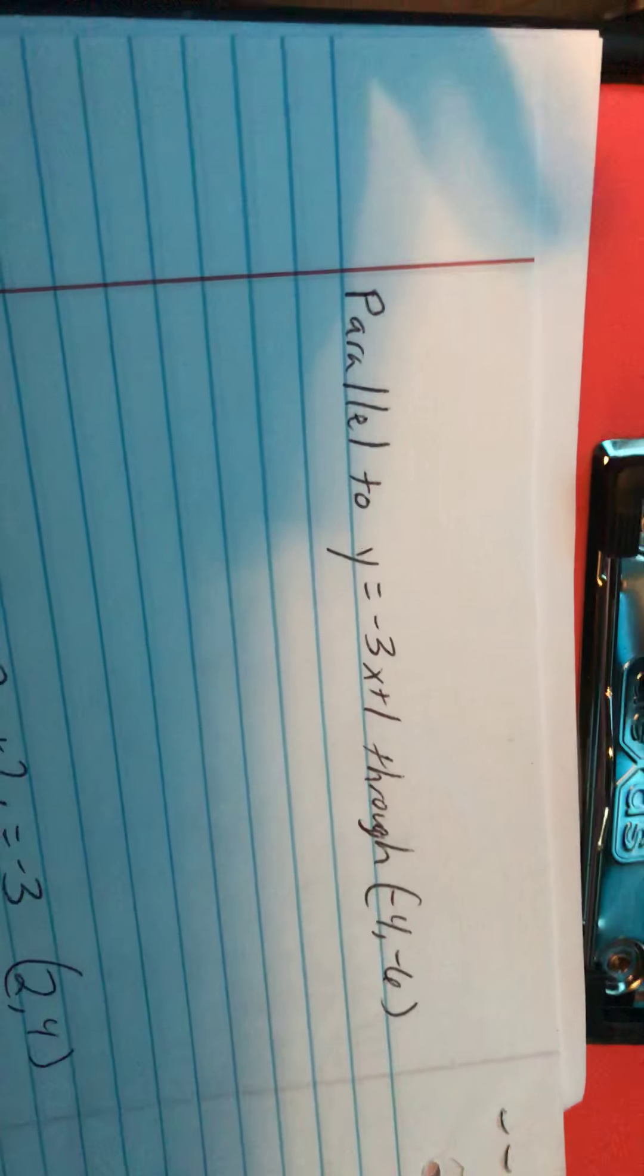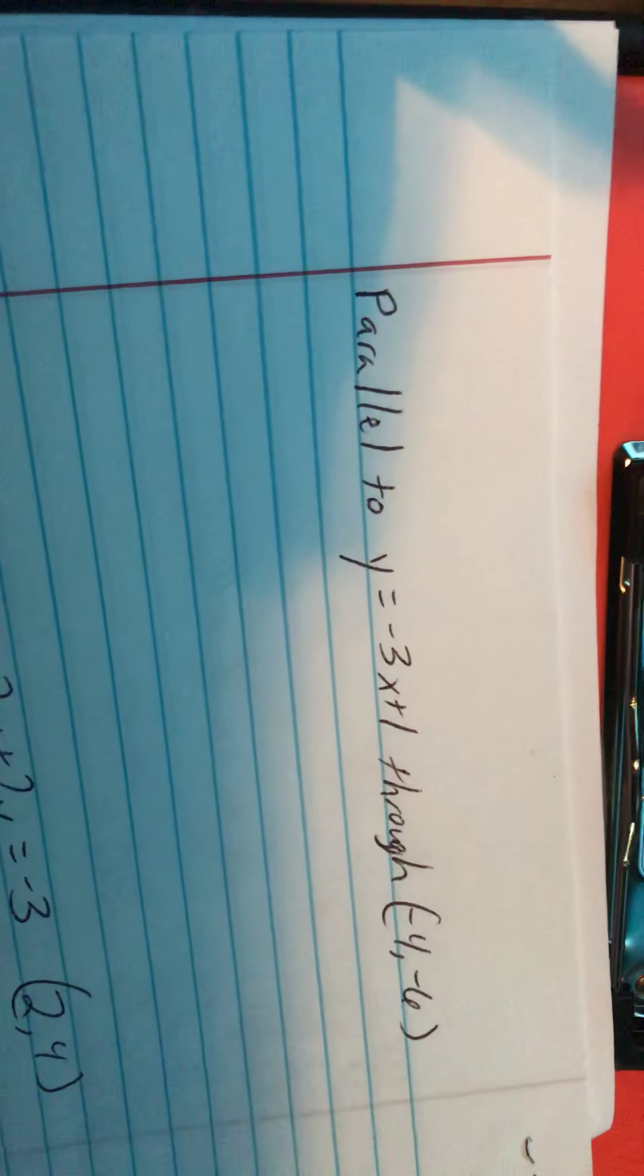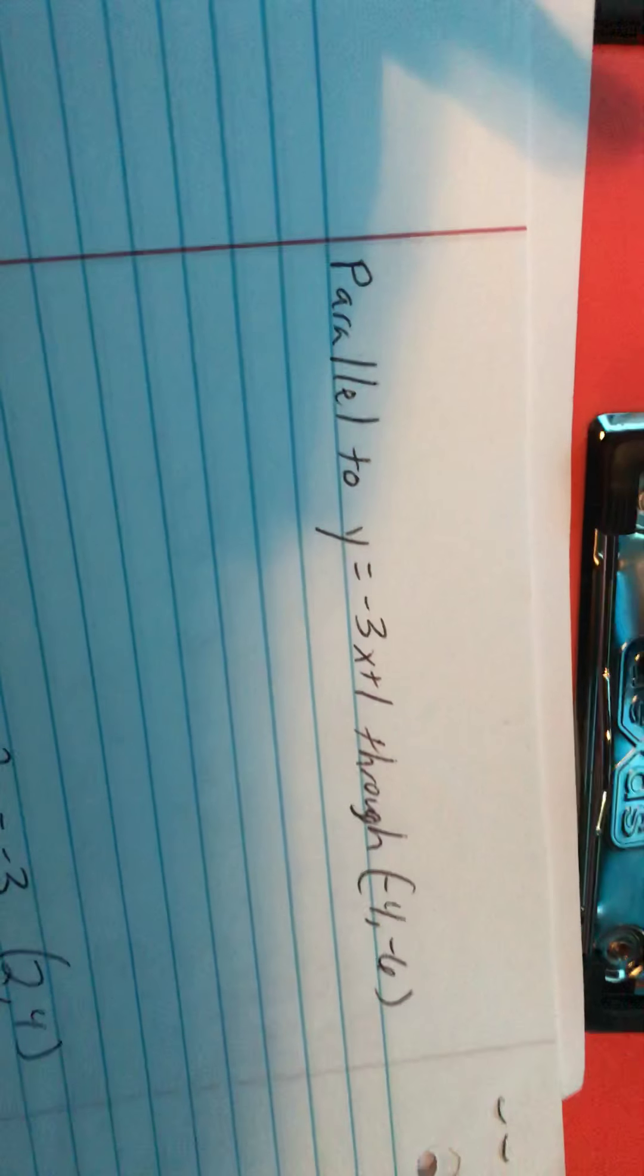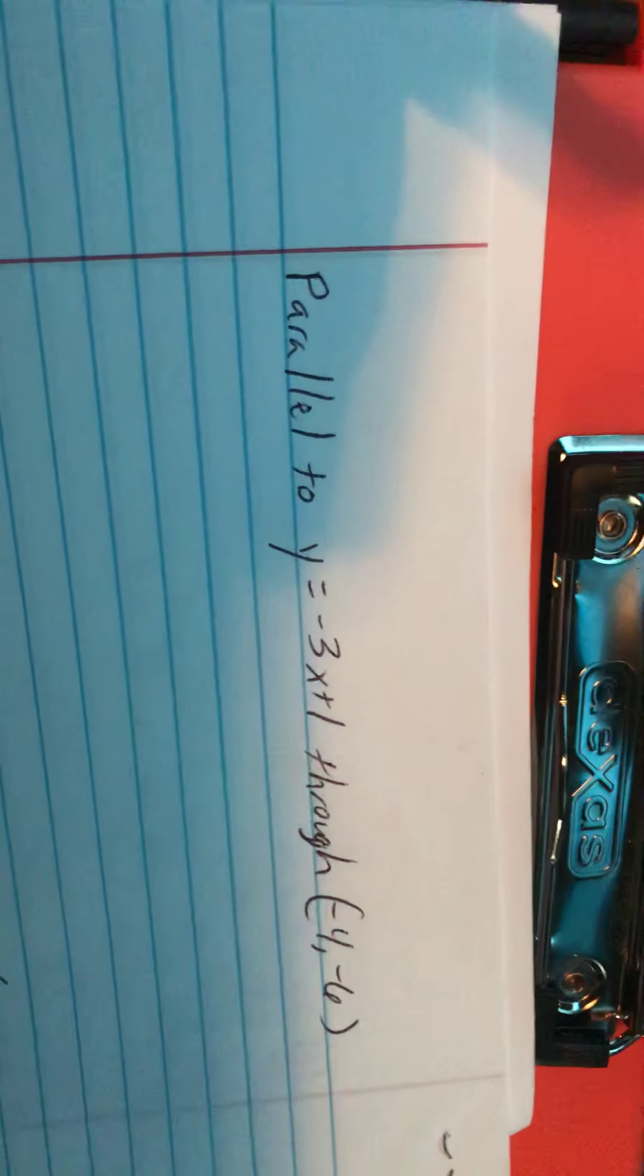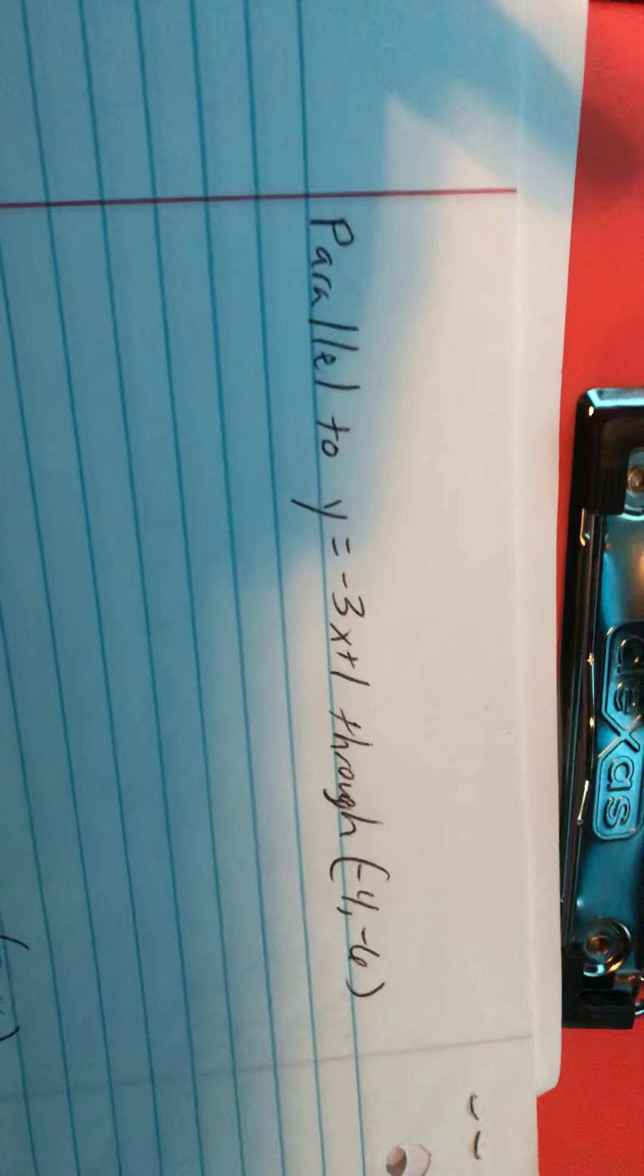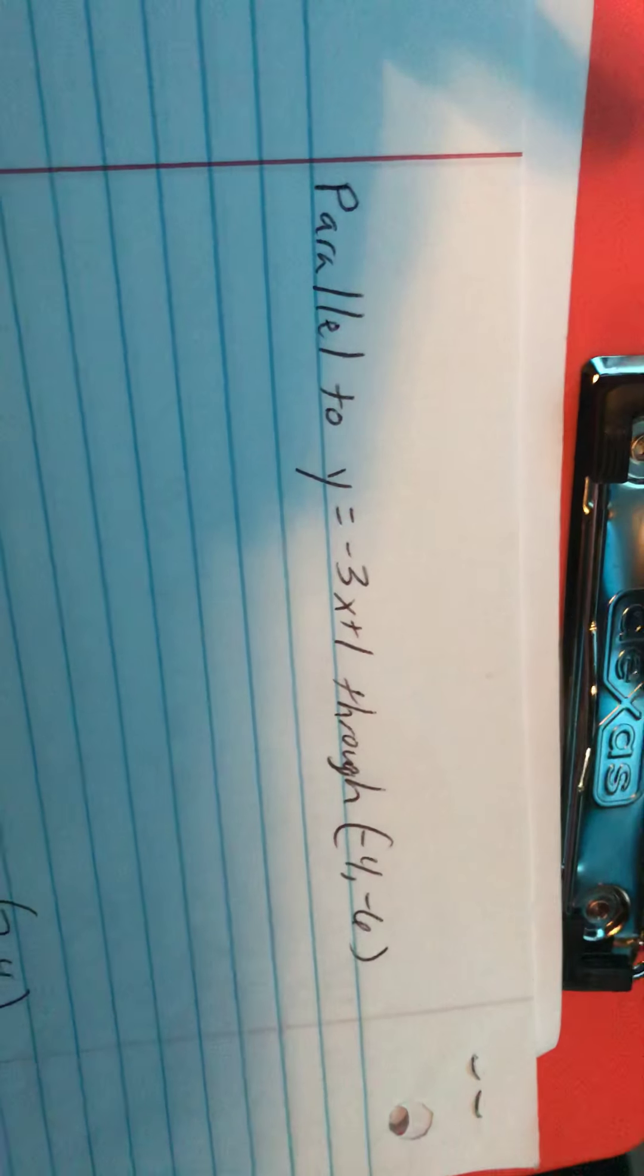So what we're doing is we are finding equations of lines that are either parallel or perpendicular to a given line and that run through a certain point. What you need to remember or memorize or keep in mind is that this equation y equals mx plus b you're going to need to commit this to memory.